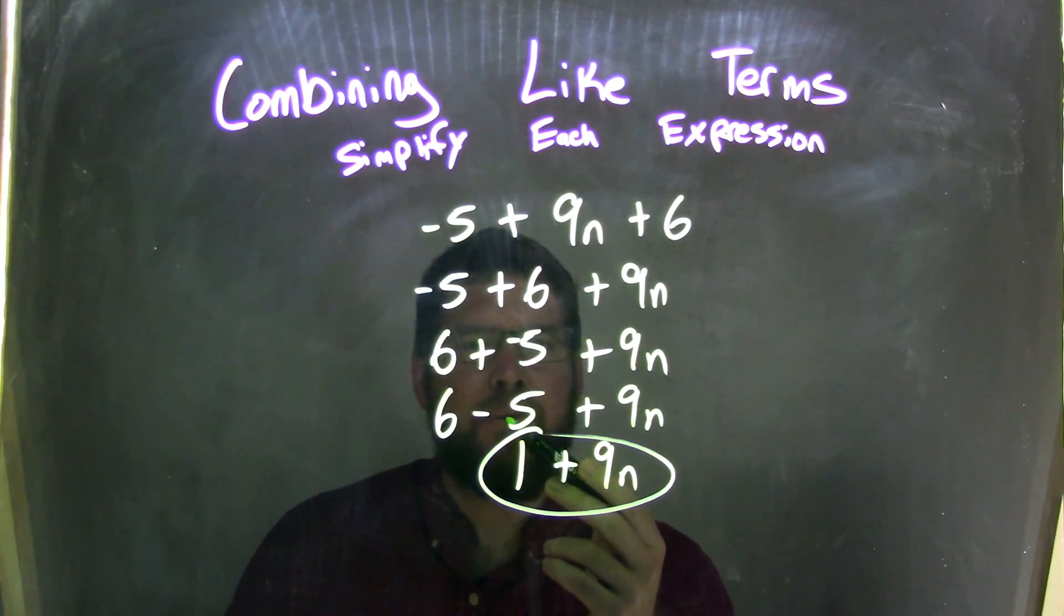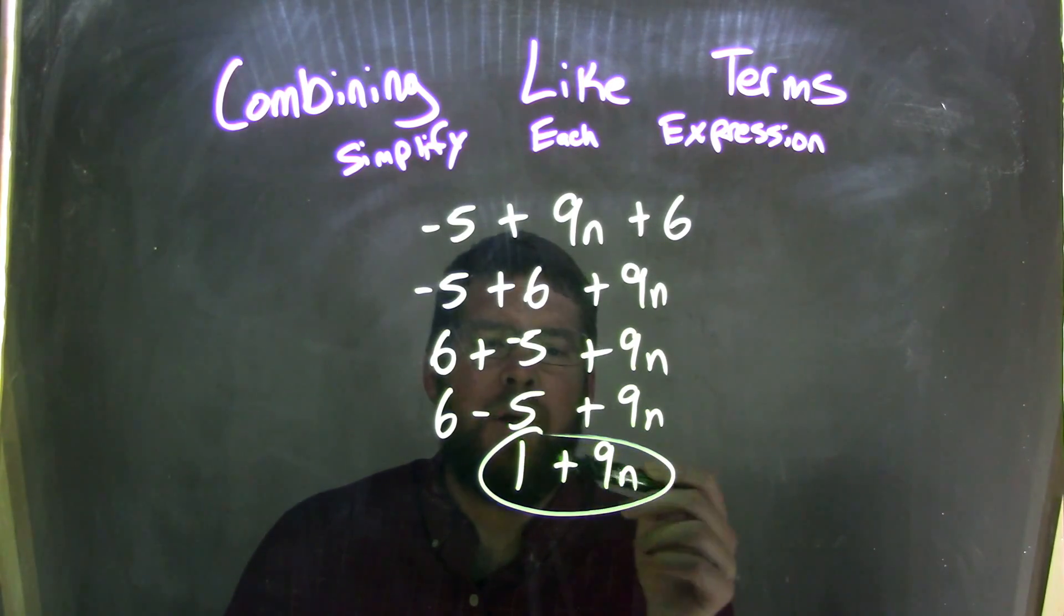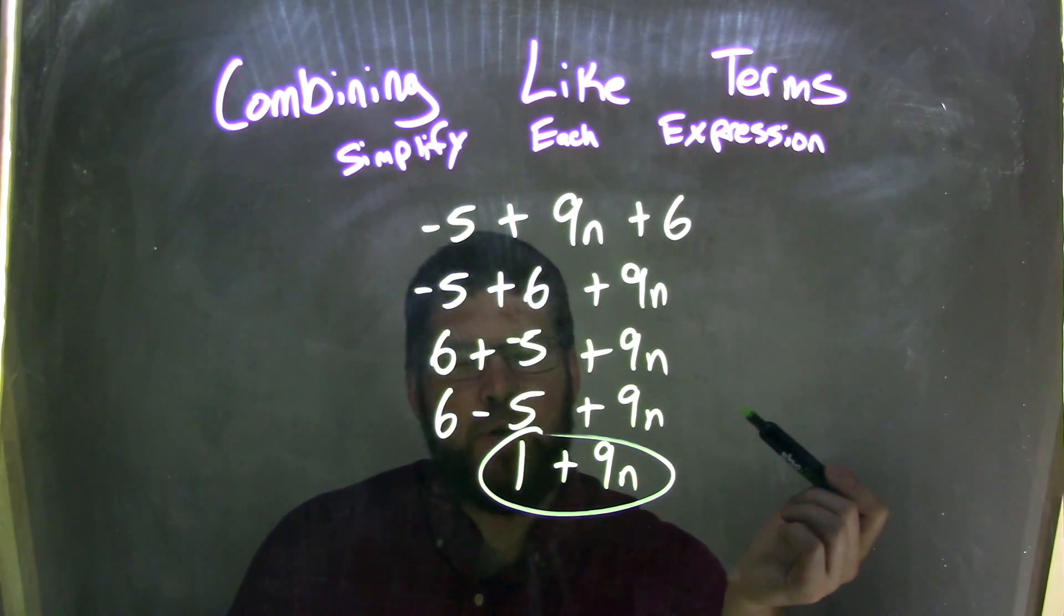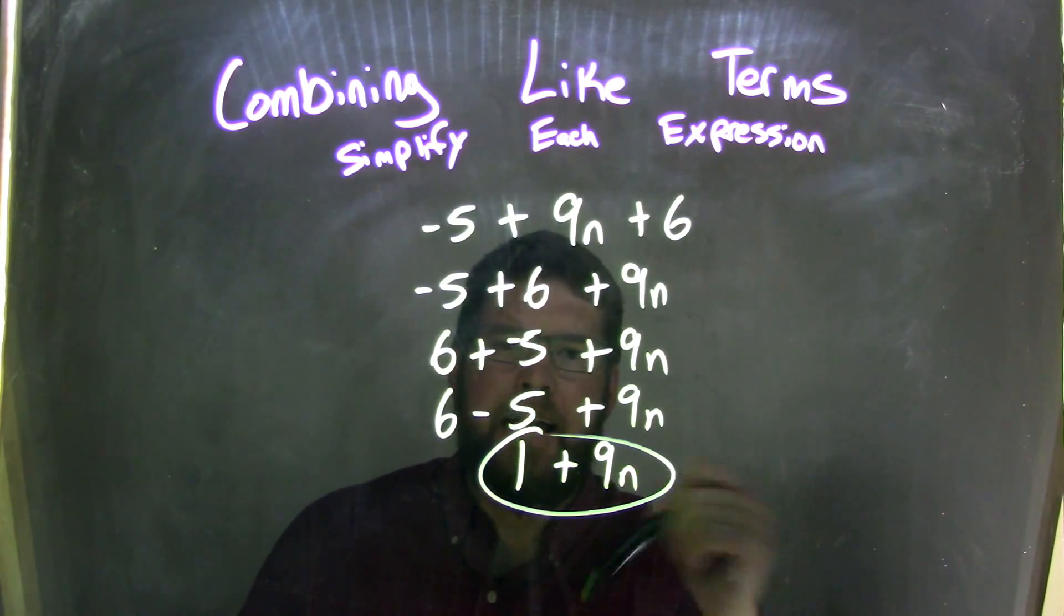Now, adding a negative is the same thing as subtraction. So, I rewrote this to be 6 minus 5 plus 9n, bringing that 9n down. And 6 minus 5 is 1, bringing down that 9n the whole way. So, it's 1 plus 9n. And there's no other like terms there. So, we are finished. And our final answer here is 1 plus 9n.